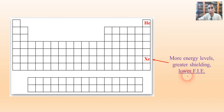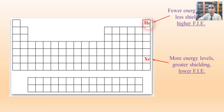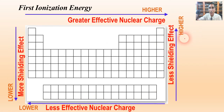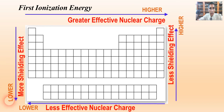It requires less energy to pull that electron from xenon. Helium, on the other hand, has almost no shielding at all — only one energy level — so fewer energy levels means less shielding and a higher first ionization energy. Looking at the overall trend, first ionization energy is higher toward the top right-hand corner and lower as you go to the bottom and left, similar to electronegativity.